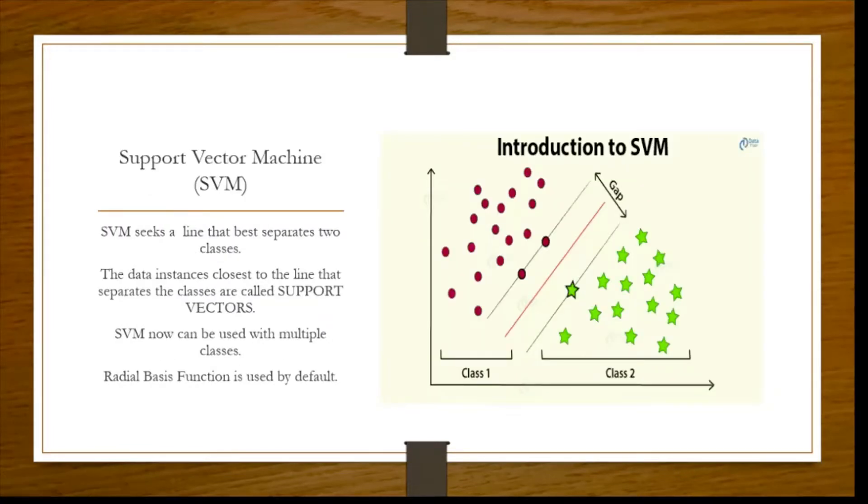Next is SVM, that is support vector machines. This is quite important and this is a very useful algorithm. What happens is this seeks a line that best separates the two classes as you can see here. And this can also be used for multiple classes with an advancement in this modification to SVM.